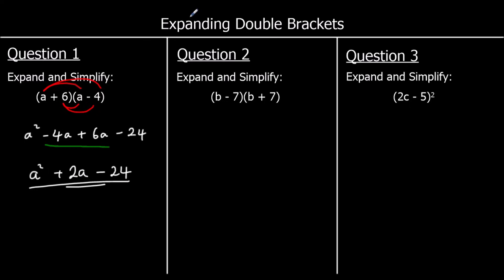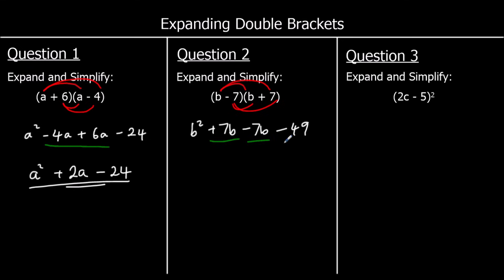Question 2 is going to be the difference of two squares. b times b is b squared. b times positive seven is positive 7b. b times negative seven is negative 7b. And negative seven times positive seven is negative 49. When we collect like terms our two middle terms cancel out — 7b take away 7b is nothing — so we've got b squared minus 49.